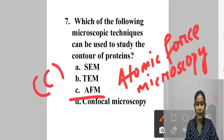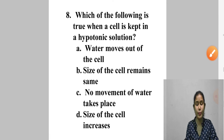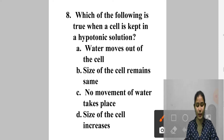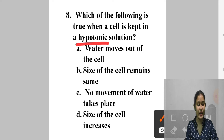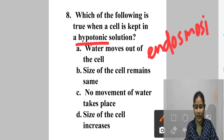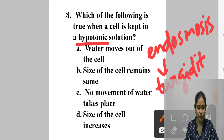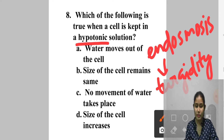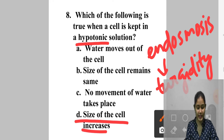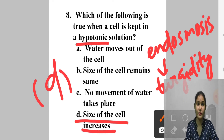Question 8: Which of the following is true when a cell is kept in a hypotonic solution? A. Water moves out of the cell, B. Size of the cell remains same, C. No movement of water takes place, D. Size of the cell increases. Due to endosmosis, water from the hypotonic solution flows into the cell through the semi-permeable membrane. If water enters, the cell increases in size. Answer is option D — size of the cell increases.